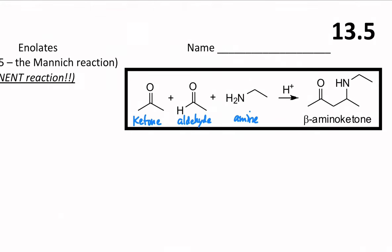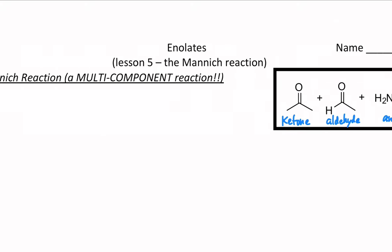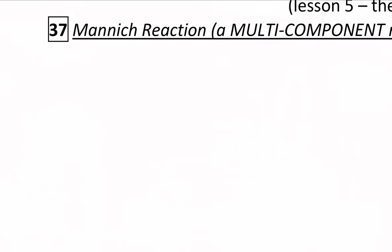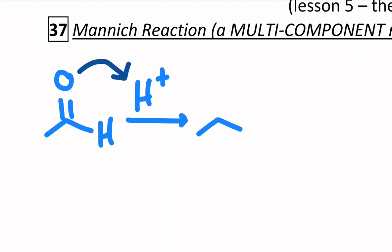So let's see how this happens mechanistically. I'm just going to use these building blocks as an example for our mechanism. Let's start by drawing out that aldehyde. This is just acetaldehyde, and under acidic conditions, an aldehyde plus an amine is going to make an iminium ion. So this is a refresher of iminium chemistry from a few units ago.